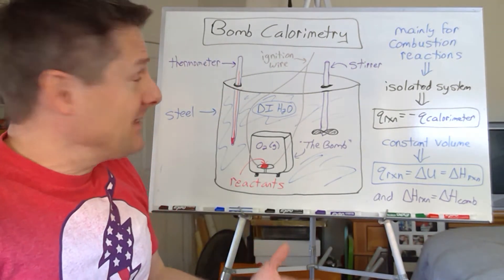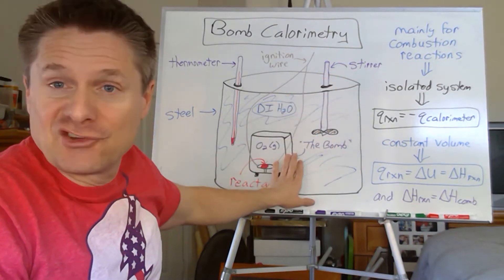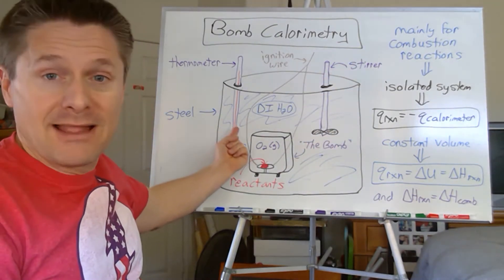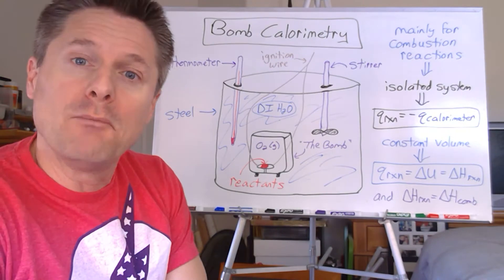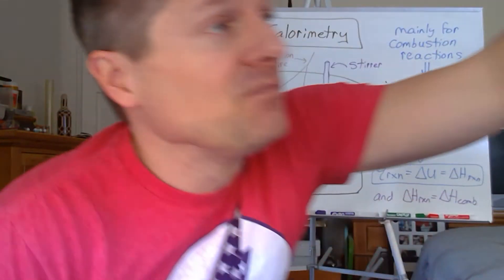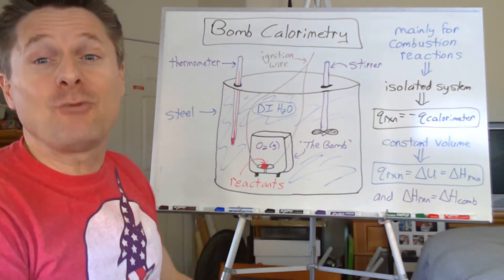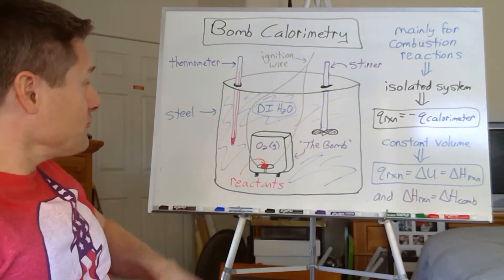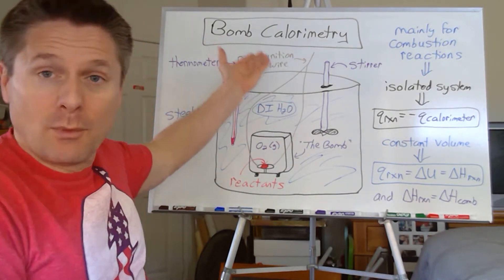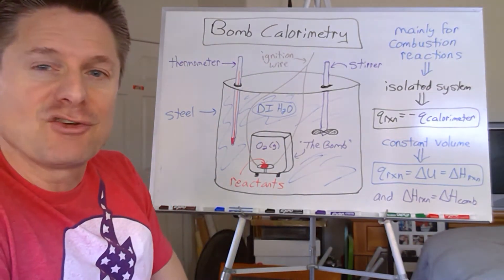It's an isolated system - there's no heat flow between the system and the surroundings. Combustion reactions are usually exothermic, which means the temperature is going to start at some initial value and then go up. They use a special thermometer that goes to two decimal places rather than one. Inside this bomb, it's an isolated system, so the temperature will probably go up because we're burning or combusting mostly fossil fuels - some kind of hydrocarbons.